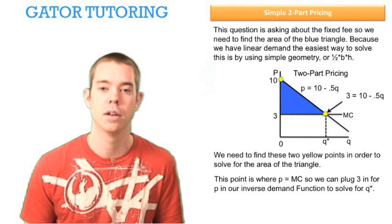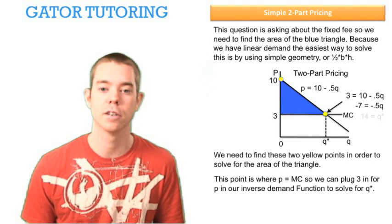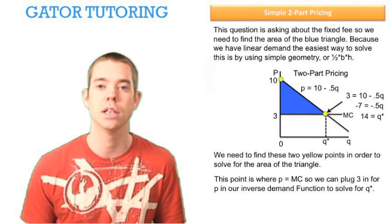So we do that, 3 equals 10 minus 0.5Q. We do some algebra, we subtract 10 from each side, and we divide through by negative 0.5, and we see that we found Q star to equal 14 in this case.